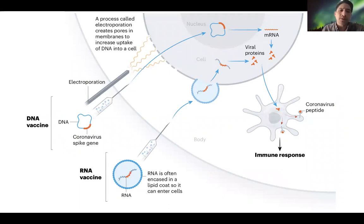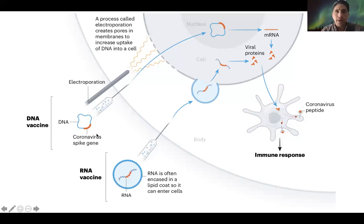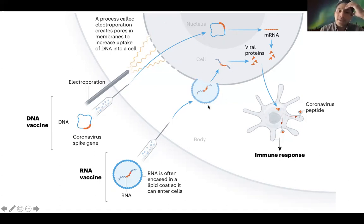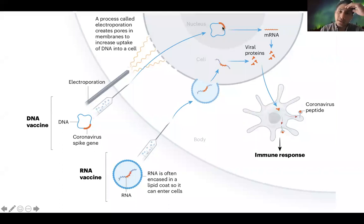Básicamente hay dos tipos de vacunas. Las vacunas de DNA, con el gen de la proteína espiga del virus, se introduce esta secuencia de DNA en otras células, se genera el RNA, se genera solamente la proteína de espiga, no todo el virus, y esta es identificada por el sistema inmunológico. También podemos hacer vacunas por medio de RNA mensajero: el RNA está encapsulado con una cubierta de lípidos, entra a las células, se traduce en proteínas virales de espiga y estimula la respuesta inmunológica.